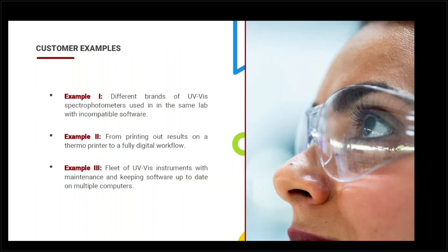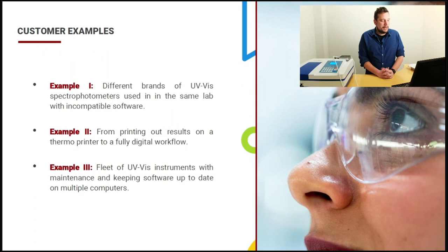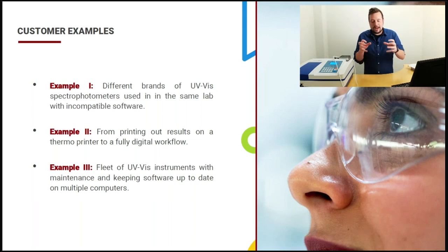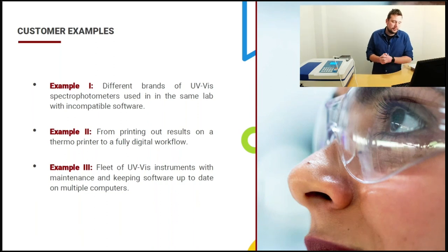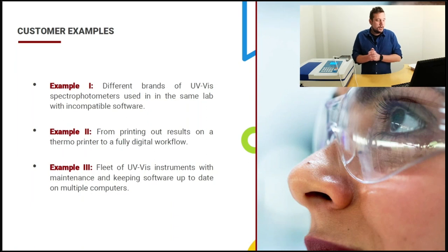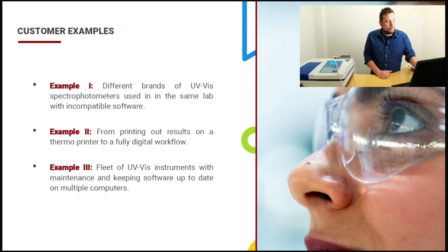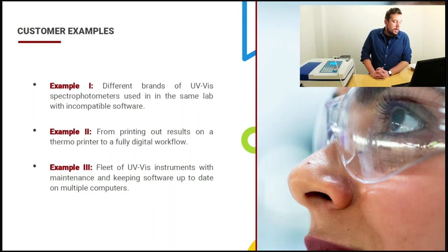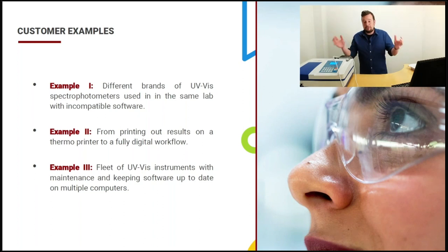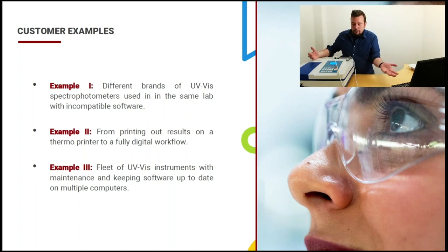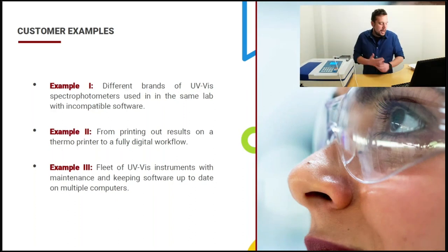Here are a few customer examples. The first is a customer where different brands of spectrophotometers were used in the same lab with incompatible software — three different brands of instrumentation — and having just one platform for all spectrophotometers was a huge time saver. Example two is where the system was used with thermal printers before, and using the Spectralink box made it possible to have a completely digital workflow. Example three is from a university with a large laboratory setup, spending quite a lot of time on maintenance and keeping software up to date on multiple computers, because each spectrophotometer had a computer or thermal printer attached.